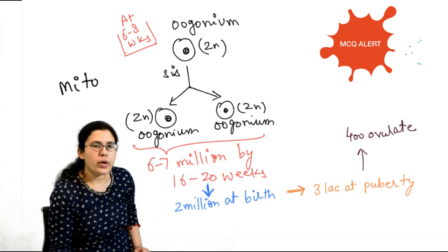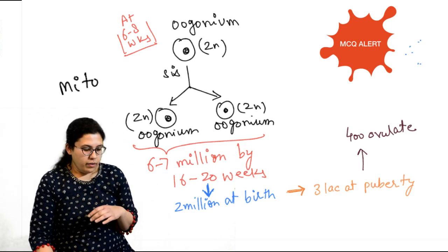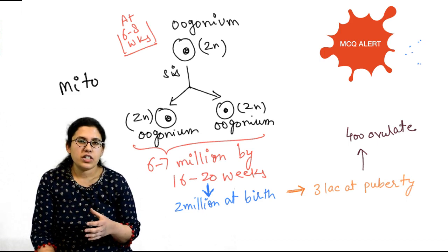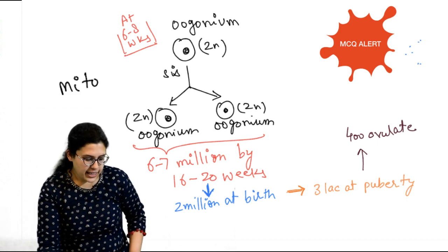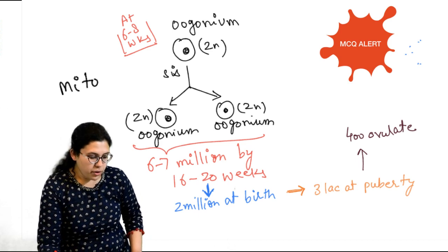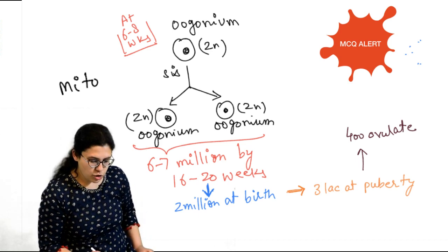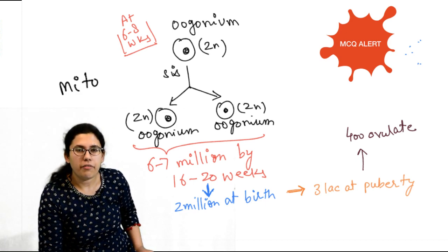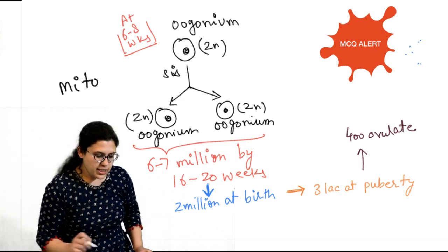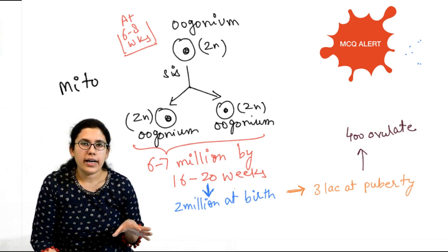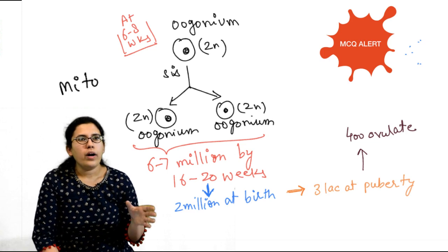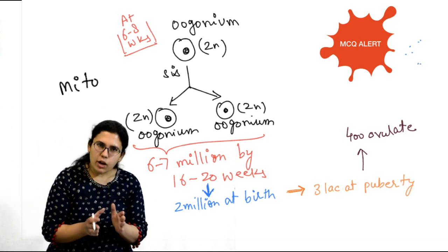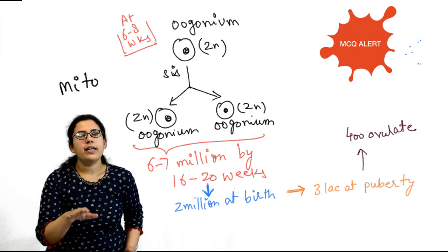Oogonia start mitosis at 6 to 8 weeks of gestation. This mitosis is so fast that by 16 to 17 weeks of gestation, their number reaches 6 to 7 million — this is the maximum oogonal content in the female ovary. From here onwards, the oogonal content is going to decrease inevitably until menopause, by which point all oocytes would have been depleted.